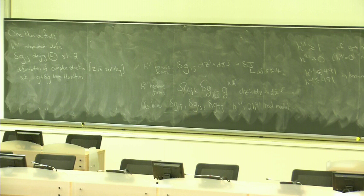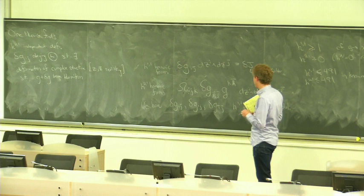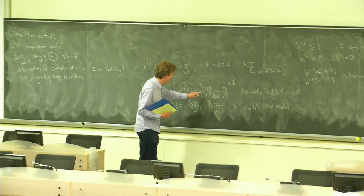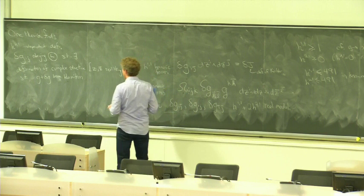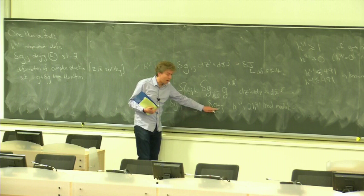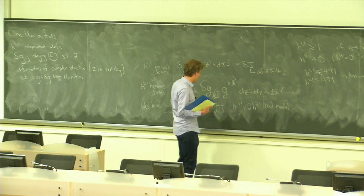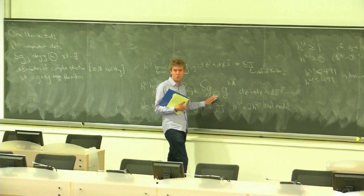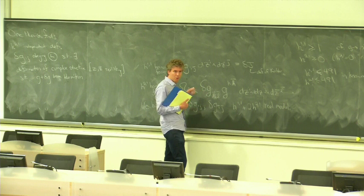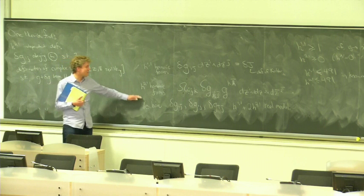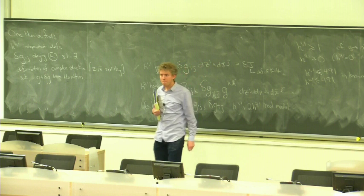A student asks how we get (2,1) forms from the delta G_{ij} deformations. The object here — or its conjugate — gives a (2,1) form from the i-bar, j-bar deformation. I got a (2,1) from a (0,2) metric deformation; likewise I can get a (1,2) from a (2,0) by putting a bar everywhere there isn't one and removing bars where there are. That's why those are distinct objects and why we get a factor of 2.